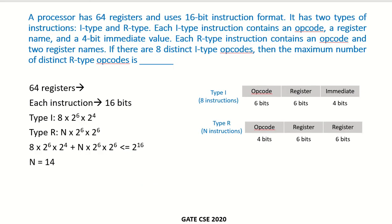Let us solve another example. A processor has 64 registers. To address any one of these 64 registers, we require log base 2 of 64 bits, which means 6 bits are required to address any register in this instruction set architecture.